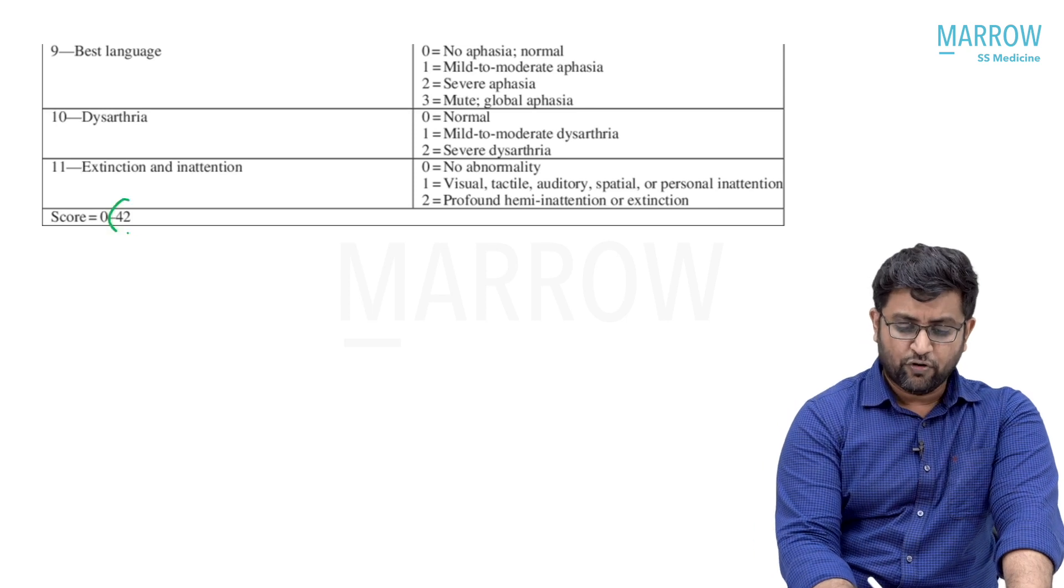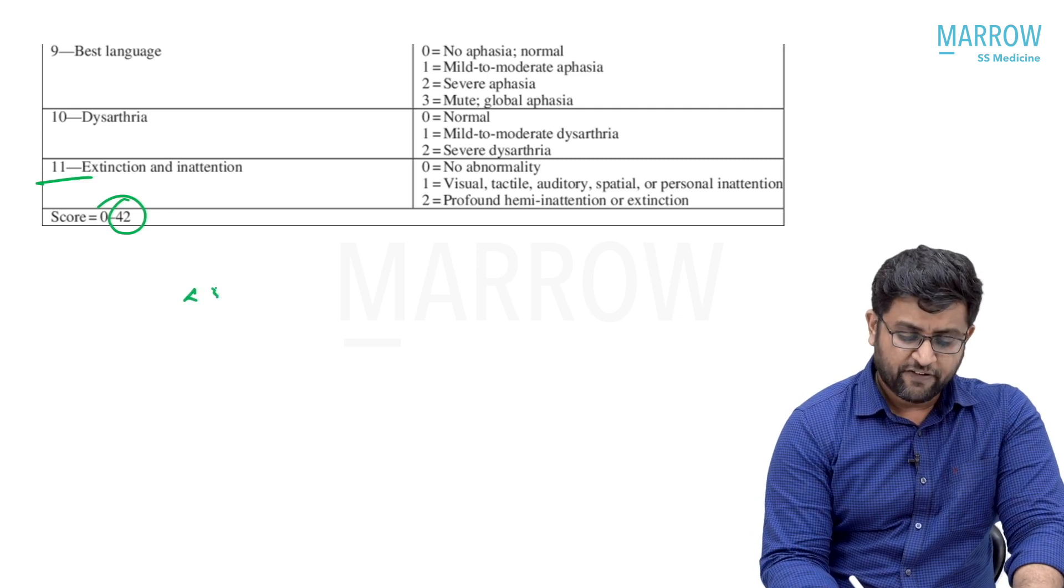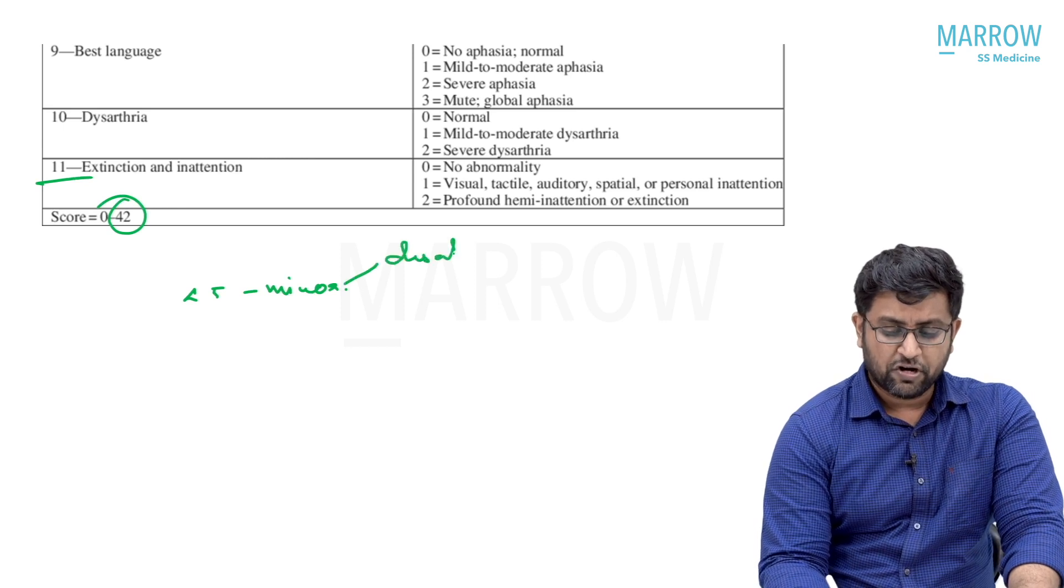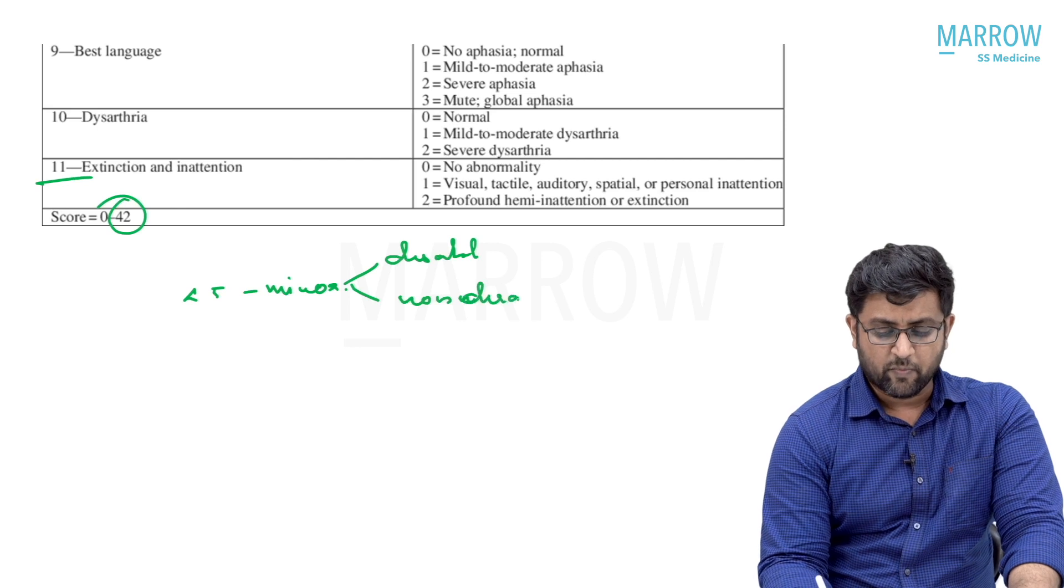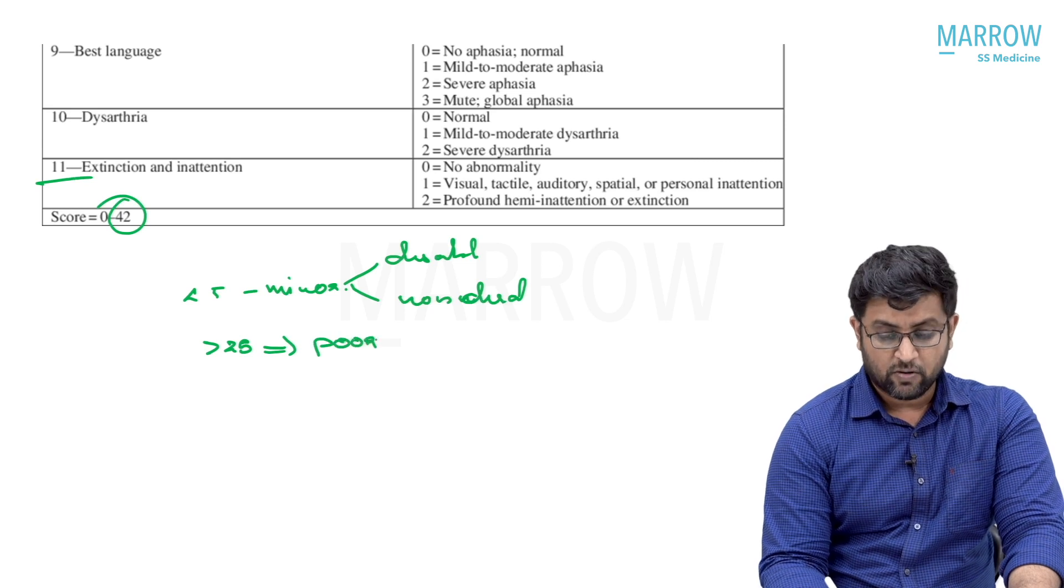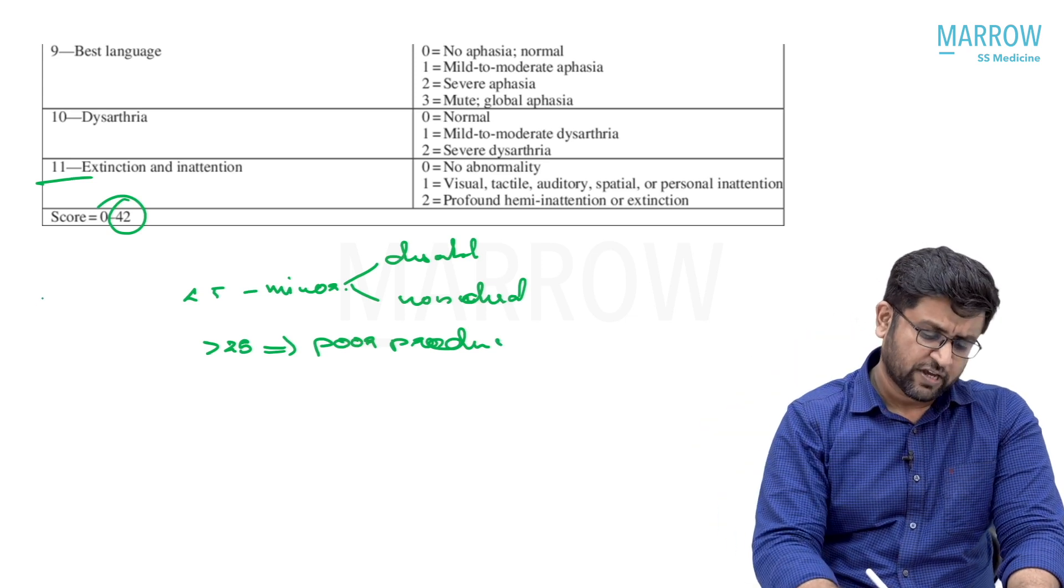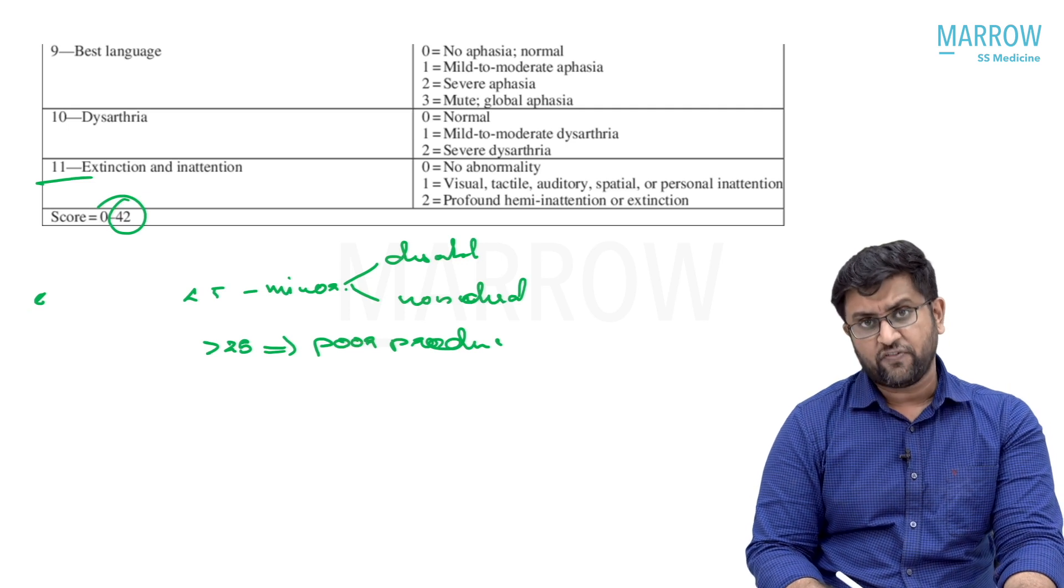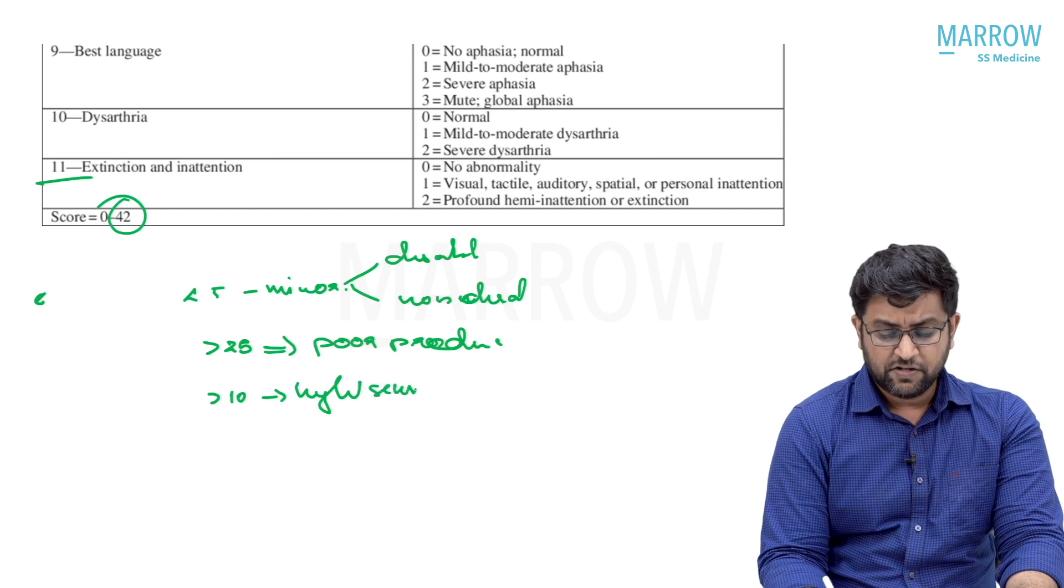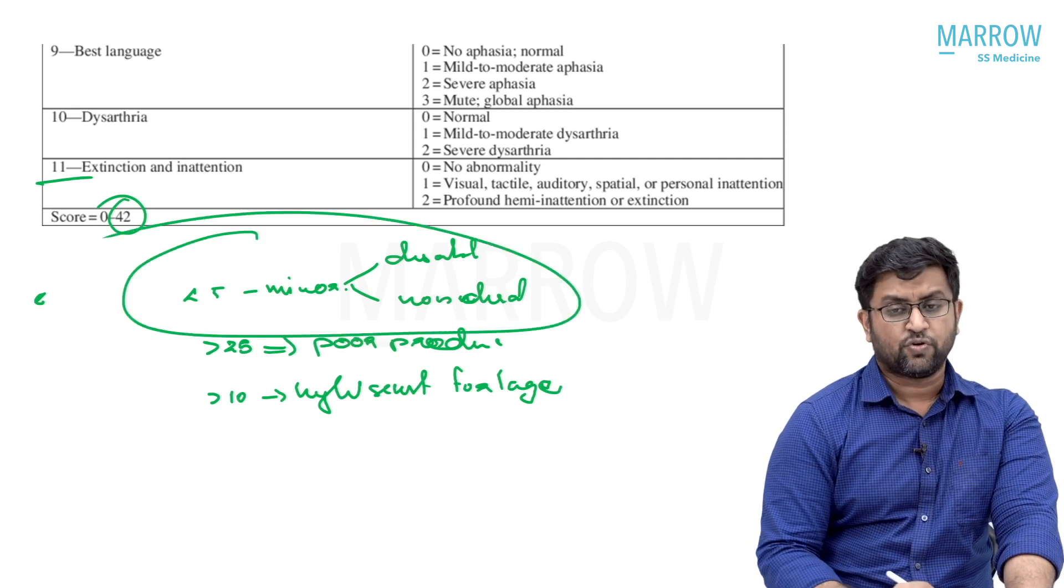Best language - these are 11 and total score of 42. That you should also know. 11 items you will check and total score of 42. A score less than 5 is known as minor stroke. Minor stroke can be disabling or non-disabling minor stroke. A stroke more than 25 has a poor prognosis that can be predicted. But this is not an absolute score. NIHSS score is better to calculate for anterior circulation, not that much useful for posterior circulation. That is one defect of NIHSS scoring. If the score is more than 10, it has high sensitivity for large vessel. Particularly if score is high, large vessel is more likely. These are the major things: minor stroke you should know.